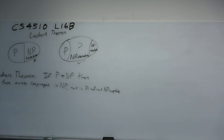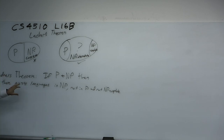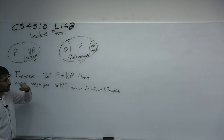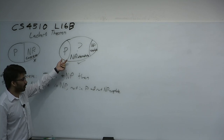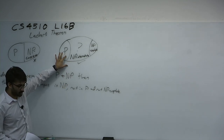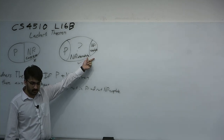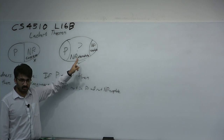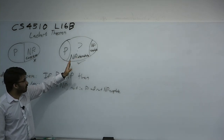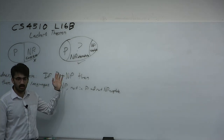In Ladner's theorem, we're going to construct a language which is sort of uselessly in NP. The original proof was by diagonalization. What you do is — diagonalization is really good at separating classes. You could force yourself to be different than every polynomial time decision procedure by forcing every polynomial time decision procedure to be wrong, by choosing the right and wrong strings. Then you would also diagonalize against every polynomial time reduction, so every reduction would also fail, and so would every polynomial time algorithm. Then, showing it's in NP, you would conclude that it's in NP, not in P, and not NP-complete.